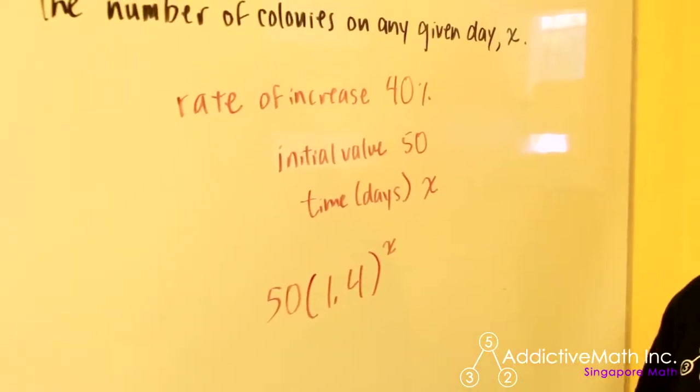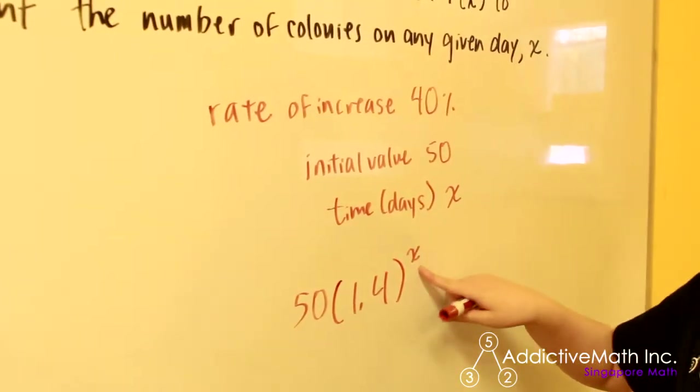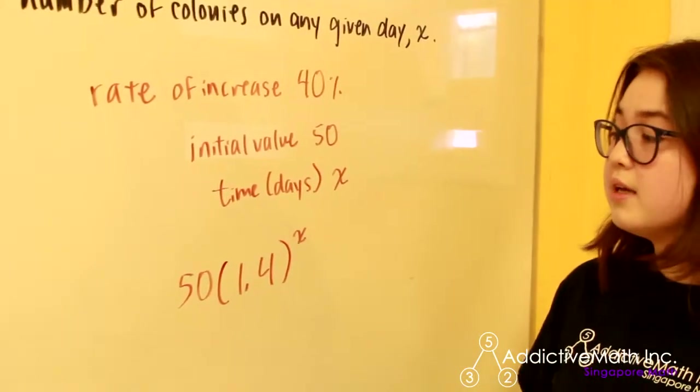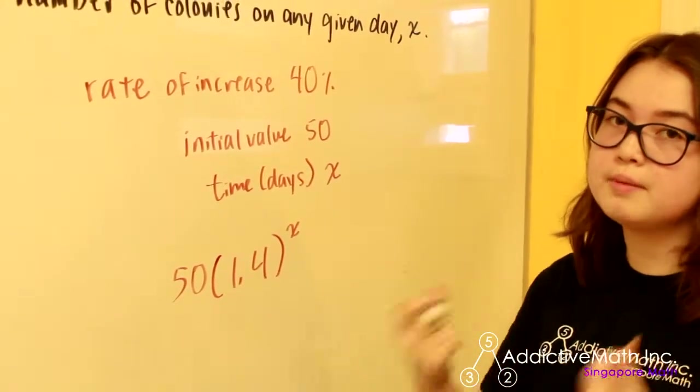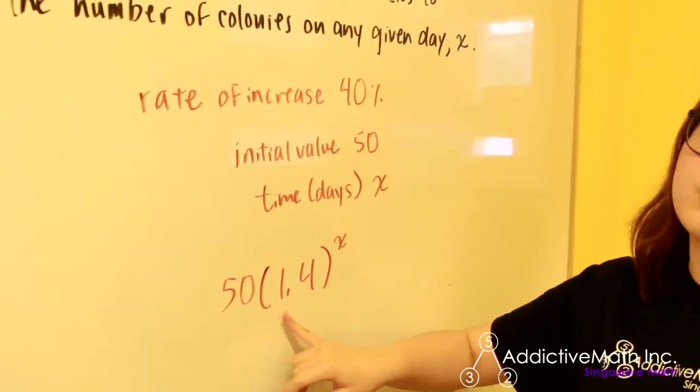If we have a number that's less than 1, for example, and we continually multiply it by itself x times because that's what our exponent represents, then we end up shrinking. 1 half times 1 half is 1 fourth. So we're getting smaller and that's what this one does.